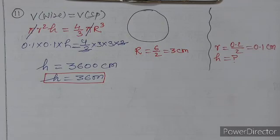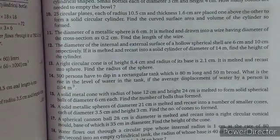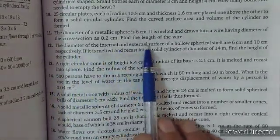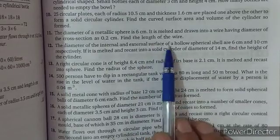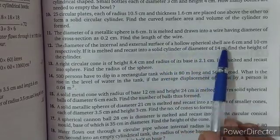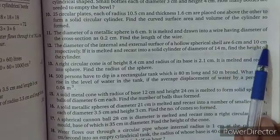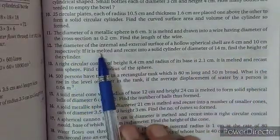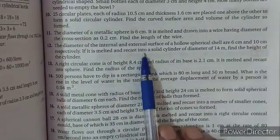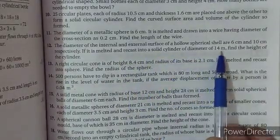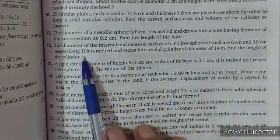सबसे पहले formula का video देखें, फिर question number 1 से start करें और practice भी करें ताकि सारी चीज़ें clear हों। Channel को subscribe ज़रूर करें। Question number 12: Diameter of internal and external surface of a hollow spherical shell are 6 cm and 10 cm respectively. It is melted and recast into a solid cylinder of diameter 14 cm. Find the height of the cylinder।